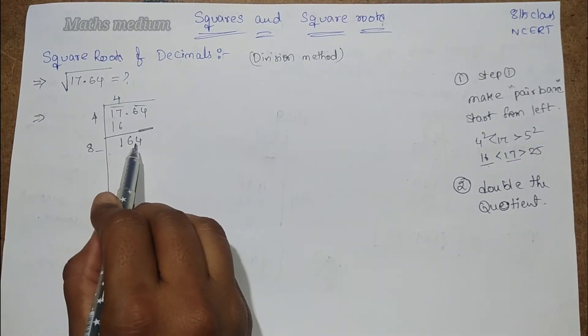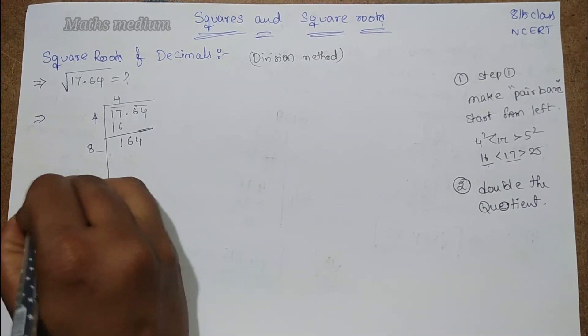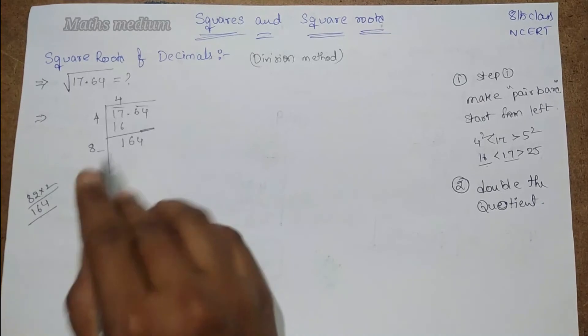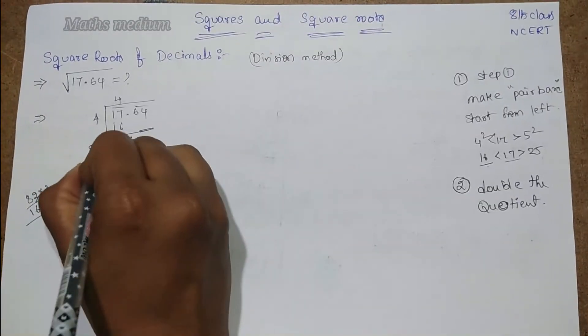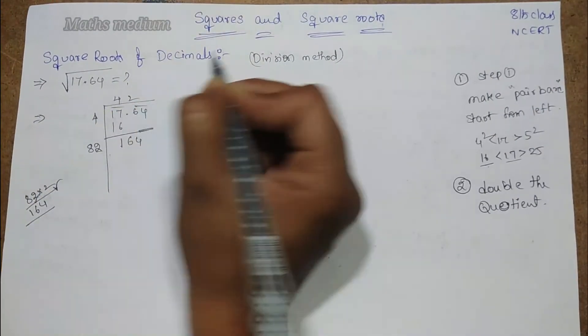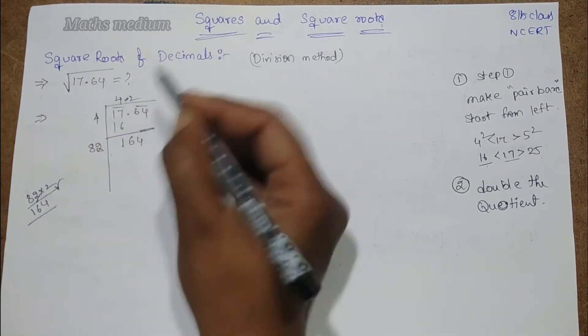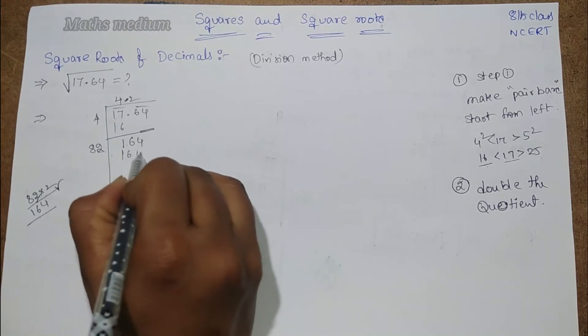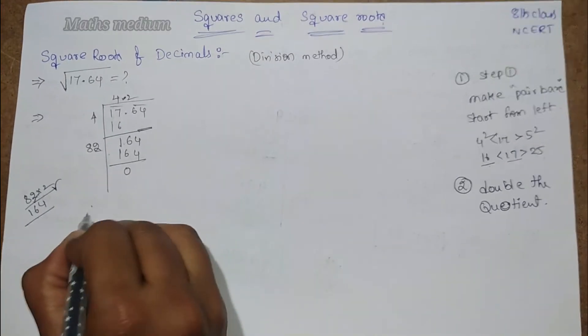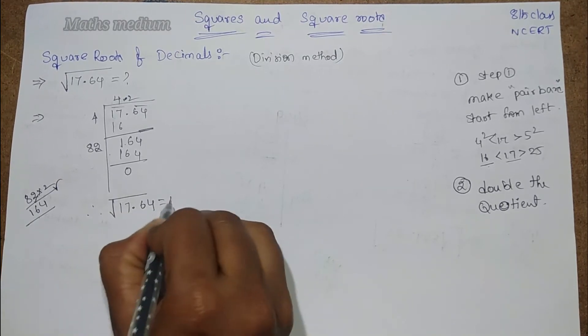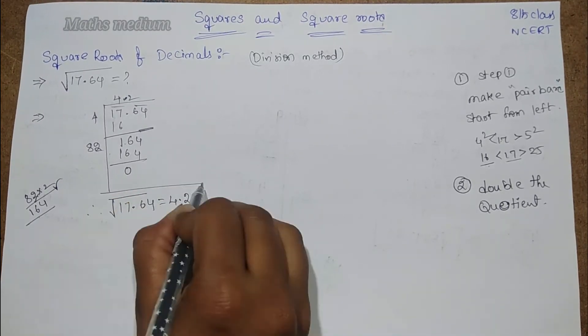If you take 2, 82 into 2. 2, 2's are 4, 2, 8's are 16. 164 is right. So, use this 2 here. Use this 2 at here. Now, put a point. Because here, we are using after the point also. Now, 82, 164, 0. Therefore, root over 17.64 is equal to 4.2 as the answer.